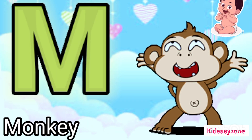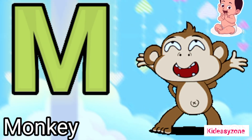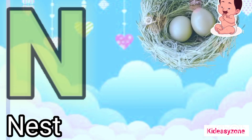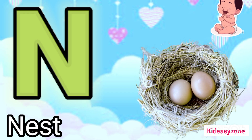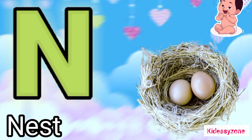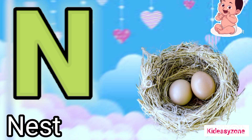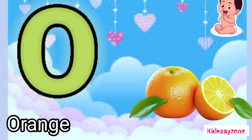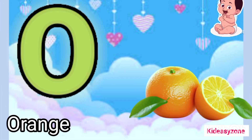M is for monkey. N is for nest. O is for orange.